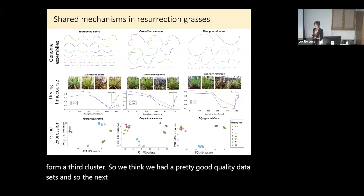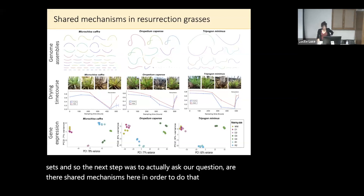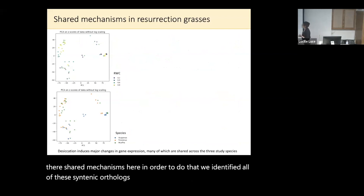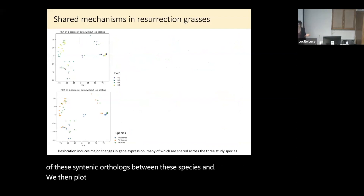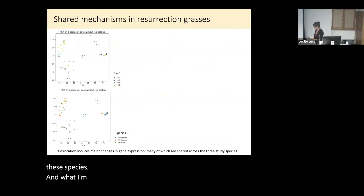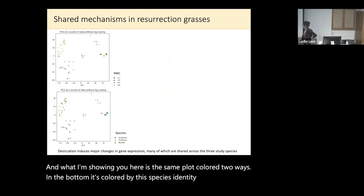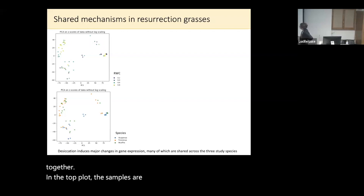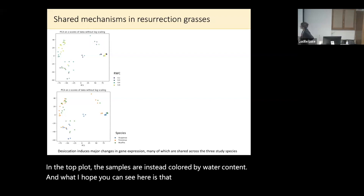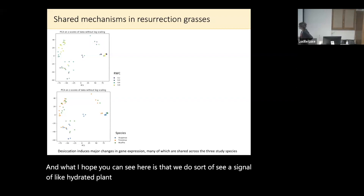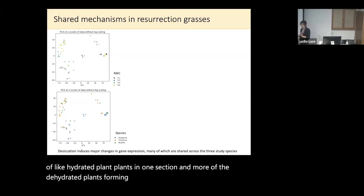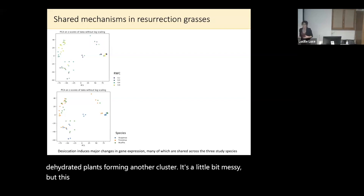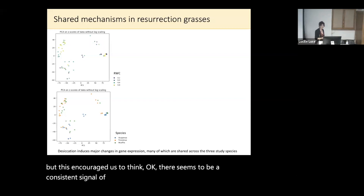The next step was to ask whether there are shared mechanisms. To do that, we identified all of the syntenic orthologues between these species, and then plotted a PCA of gene expression based on those shared genes. In the bottom plot, colored by species identity, the species are really mixed together. In the top plot, colored by water content, we do see a signal of hydrated plants in one section and more dehydrated plants forming another cluster. This encouraged us to think there seems to be a consistent signal of dehydration across these three species.